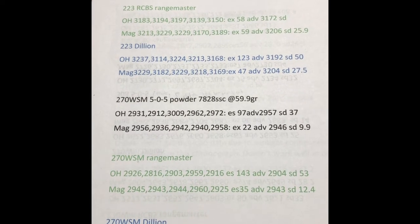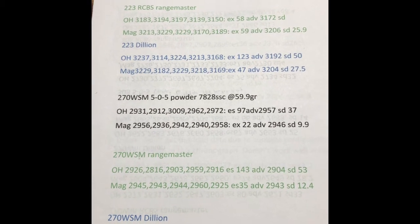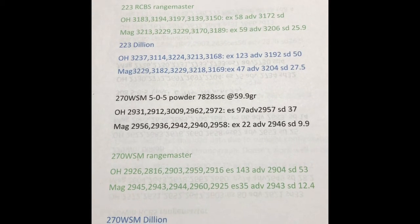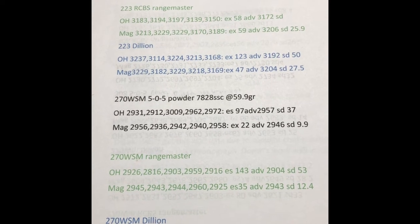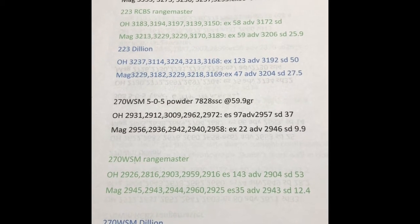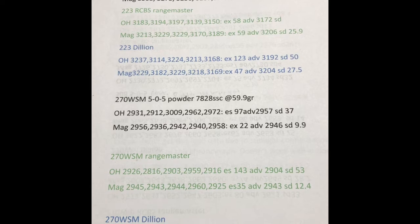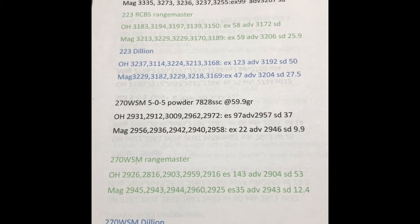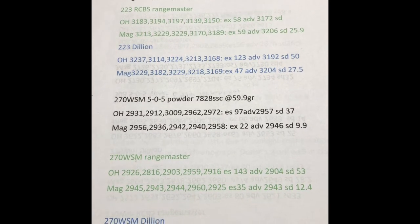As for the Oehler Chronograph, it was saying that extreme spreads were 12, 143, and then 97. As for the MagnetoSpeed, it was saying that the extreme spreads were 22, 35, and 18.